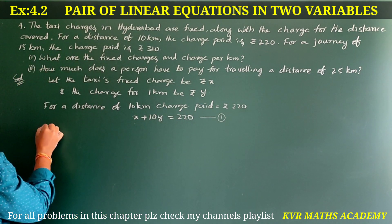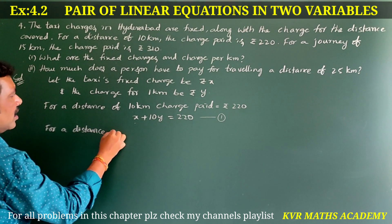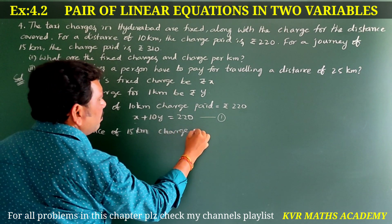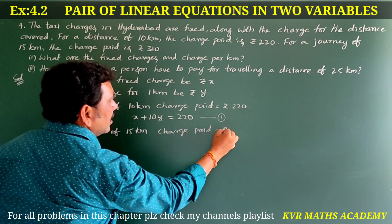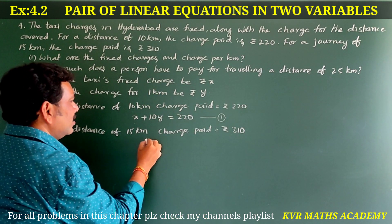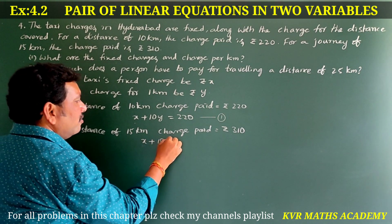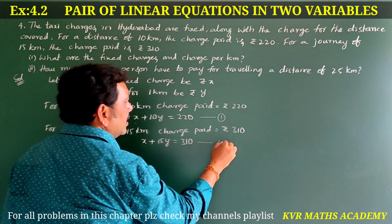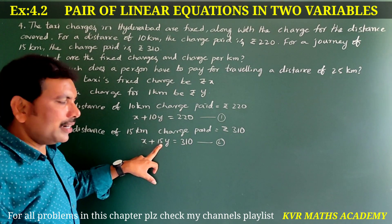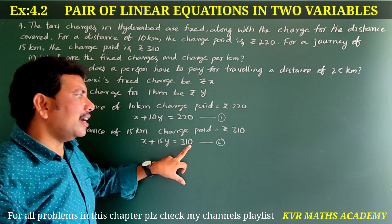In the same way, for a distance of 15 kilometers, the charge paid is 310 rupees. So: fixed charge X plus 15 into Y equals 310. That is, x plus 15y equals 310. Take this as equation number two.